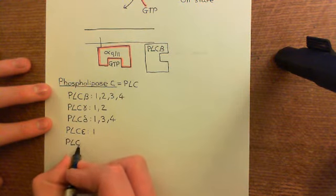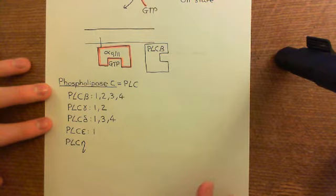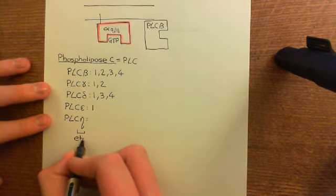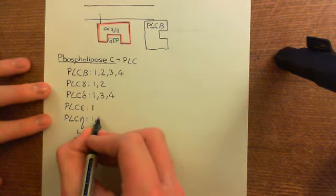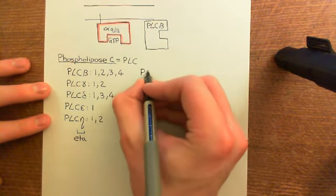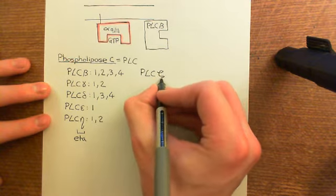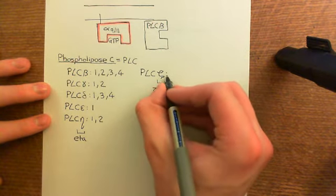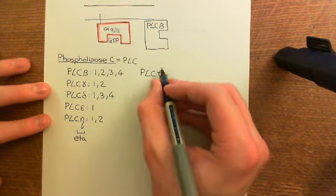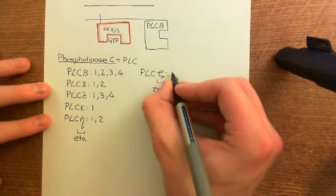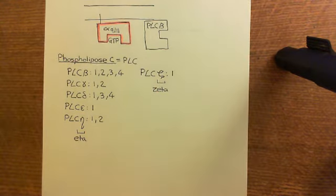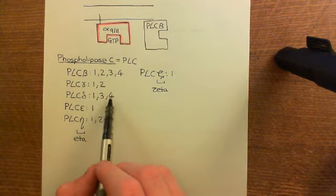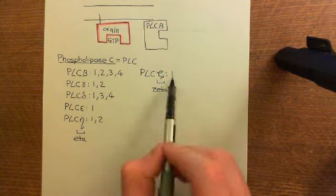Then we have the phospholipase C eta family — eta is this strange N-like symbol. Phospholipase C eta 1 and eta 2 exist. And then there is phospholipase C zeta — the same symbol used in maths for the Riemann hypothesis zeta function. There is only one gene there: phospholipase C zeta 1. That brings the total to 13 genes across all the families.